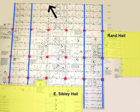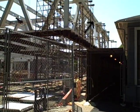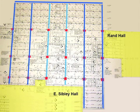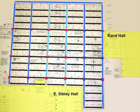Another truss is fastened to the ends of these four cantilever trusses, providing support for two lines of interior girders. With these six lines of structure, a regular pattern of floor and roof beams can complete the framing.